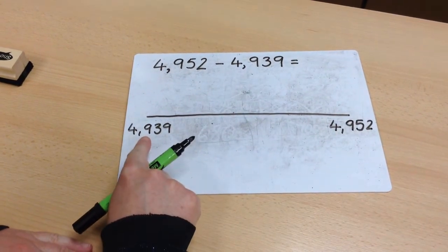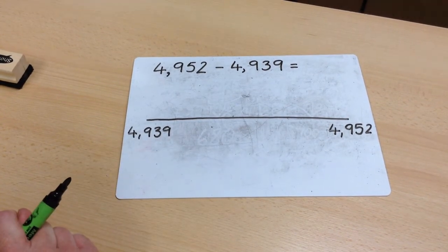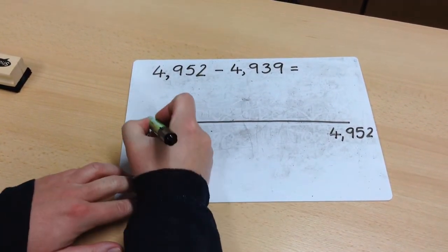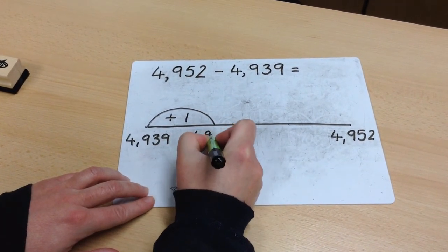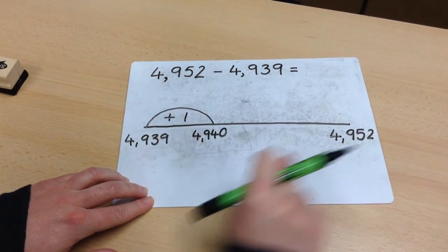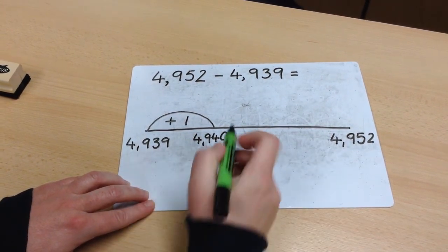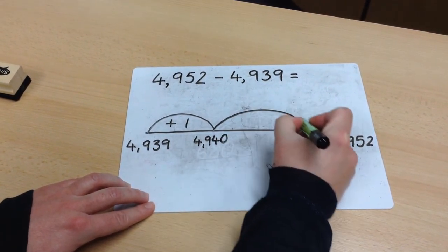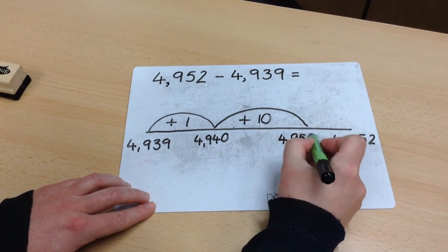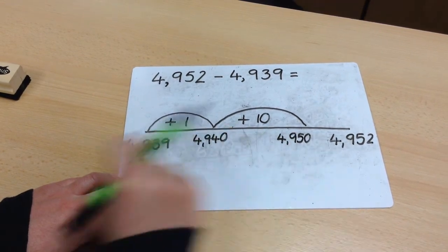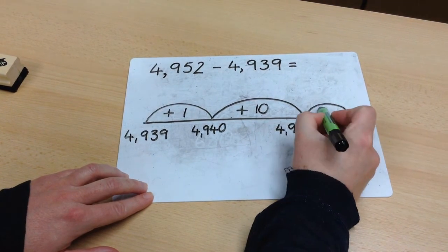Now it's time to count on from the subtrahend to the minuend. I'm going to get to the next multiple of 10 first, which will be 4,940. I only need to add one. Where have I got to get to? I'm going to add a 10 to help me to get to 4,950. It's really important you put your numbers at the bottom of the number line so that you know what number you are on. I only need to add 2 more to get to that end number.